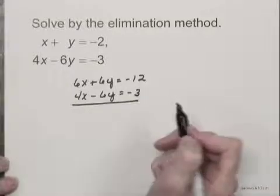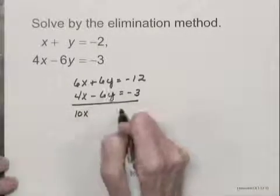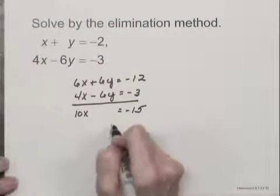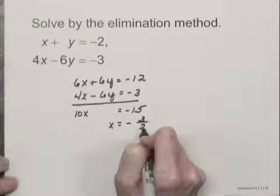And now I'm going to add. I have 10x plus 0y equals negative 15. And when I divide by 10 on both sides, I have x equals negative 3 halves after I simplify.